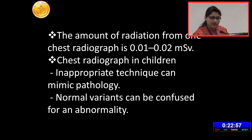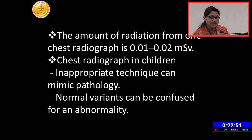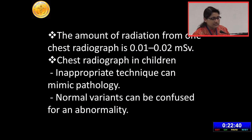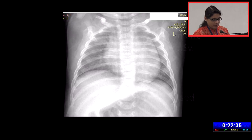Whenever you talk about a radiograph, you have to know how much radiation a kid is getting by getting a chest radiograph. The amount of radiation from one chest radiograph is around 0.01 to 0.02 millisieverts. Chest radiograph in children can be challenging because a small difference in technique can mimic pathology, and even normal variants can be confused for an abnormality.